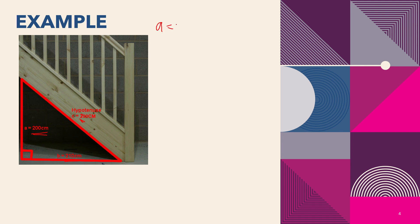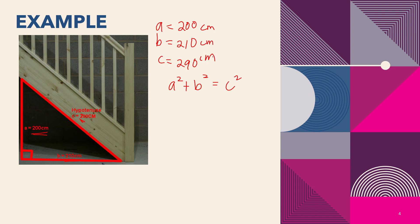So, I'll write down the values: A is 200, B is 210, and C is 290. We will prove whether this fits a right triangle. The formula is: a squared plus b squared is equal to c squared. Note that A and B can be interchanged — the vertical leg can be B and the horizontal can be A, or vice versa — but C, the hypotenuse, can never be swapped with another variable.